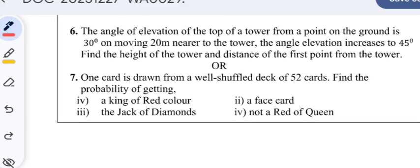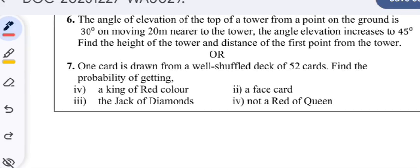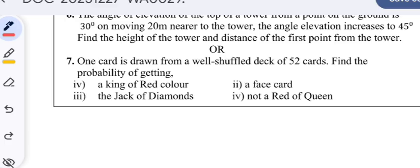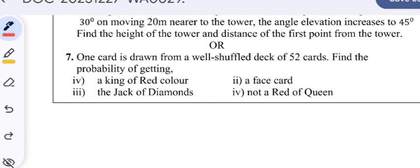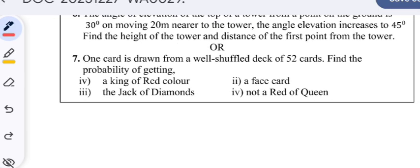Or, one card is drawn from a well-shuffled deck of 52 cards. Find the probability of getting: i) a king of red color, ii) a face card, iii) the jack of diamonds, iv) not a red queen. The answers are also given.